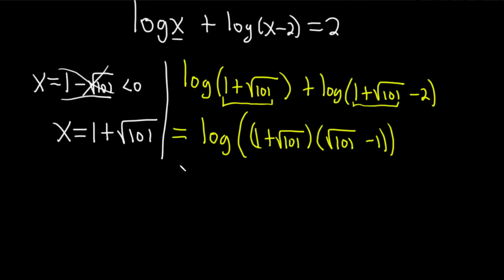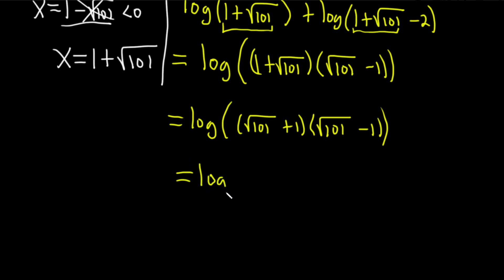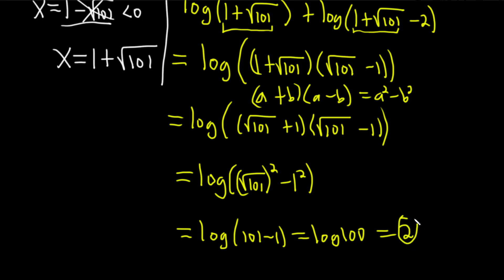So there's something interesting here. I'm going to write this one more time to show you. I noticed a pattern. So this is log of (square root of 101 plus 1). And then here we have (square root of 101 minus 1). So this is going to be a plus b and then a minus b. So it's going to be the difference of squares, so it's a squared minus b squared. Your a is the square root of 101 and your b is 1. So this is going to be the square root of 101 squared minus 1 squared. This is equal to the log of (101 minus 1), which is equal to the log of 100, which is equal to 2. Boom. So it checks. All is good.